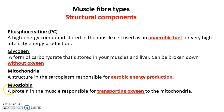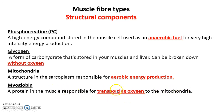Next is myoglobin — a protein found in the muscle whose key role is to transport oxygen from the blood into the muscle cell. It's a protein located in the muscle that is basically responsible for transporting oxygen to the muscle cell.